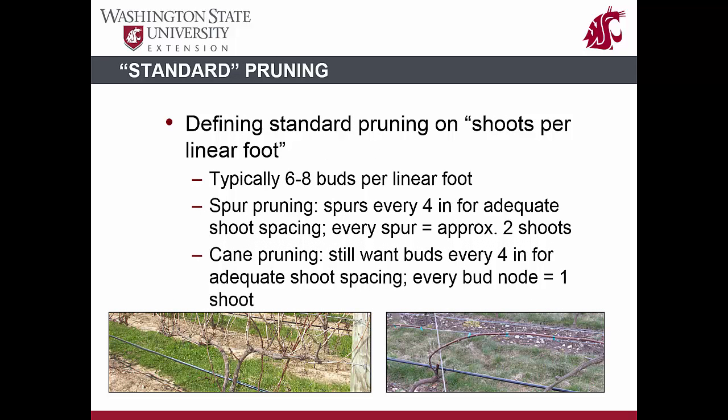Standard pruning fixes the total number of shoots per linear foot of canopy. In spur pruned vines, this refers to the total number of buds left on each spur, with each spur position determined and renewed approximately every four inches on the cordon. In a cane pruned vine, canes are selected that have a similar spacing — a node approximately every four inches. With standard pruning, the ideal situation is to have six to eight shoots per linear foot. This is a lot harder to achieve in cane pruning, so often divided canopies are used in cane pruning scenarios. One major drawback for standard pruning is that while it is easy to implement, it really doesn't account for the vigor of the vine.